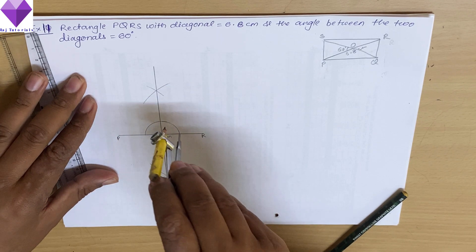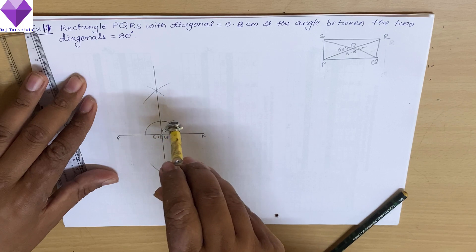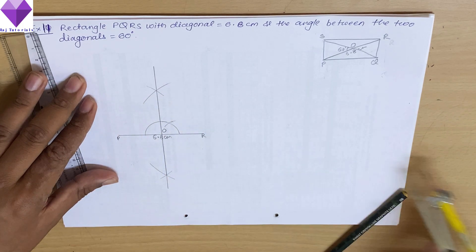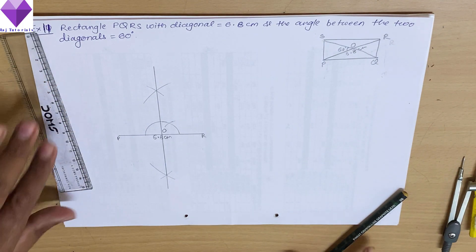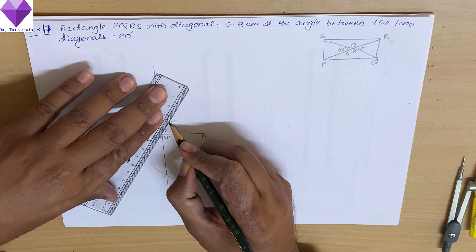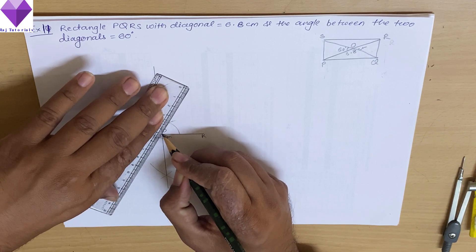Now this is my 60 degree. So now the other diagonal will be at this angle passing through O point.